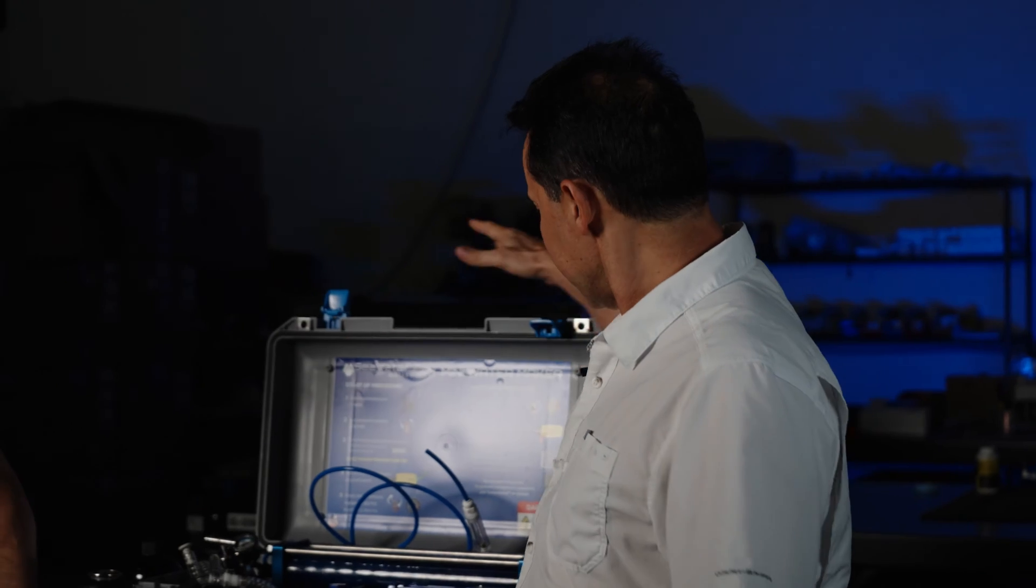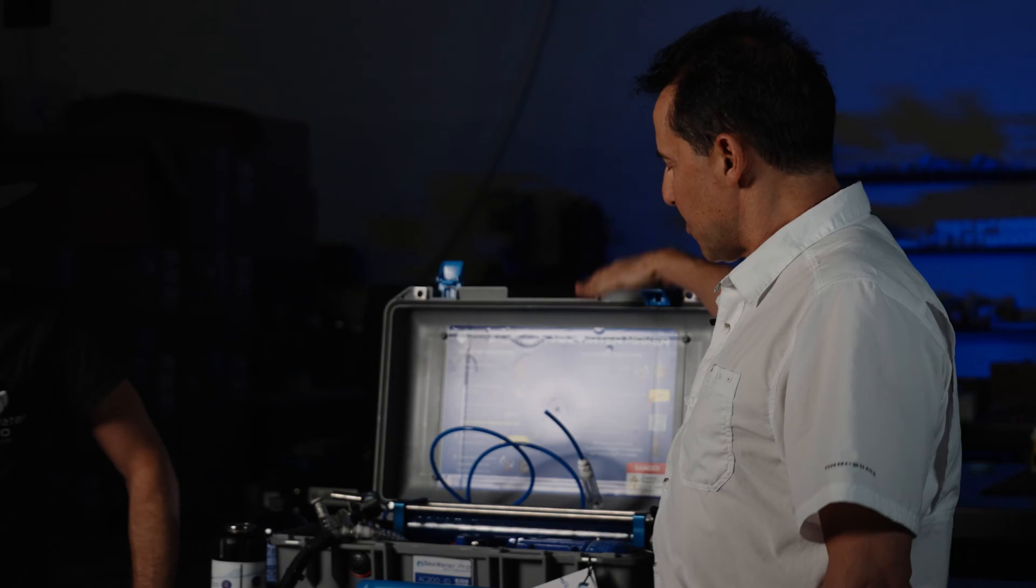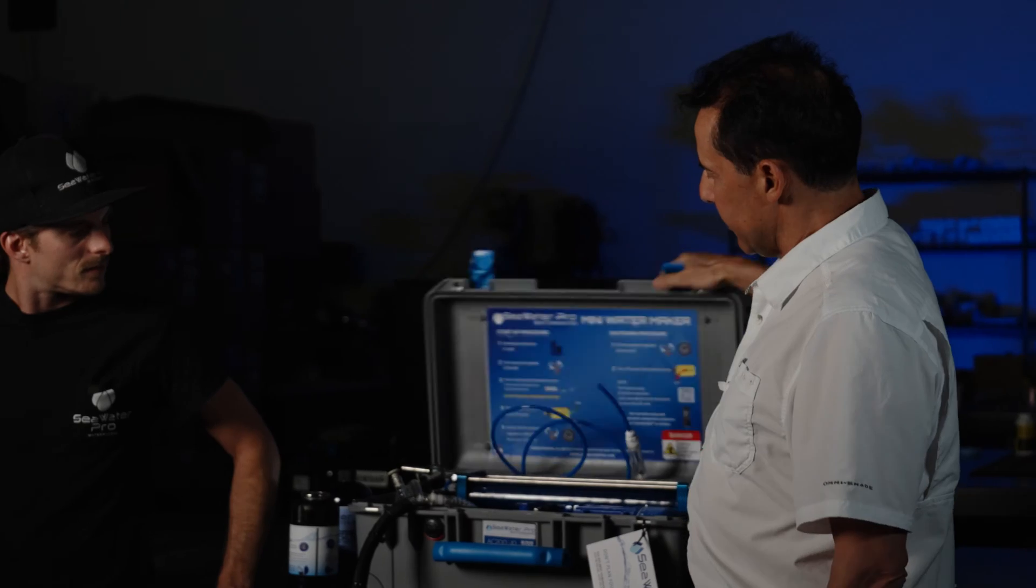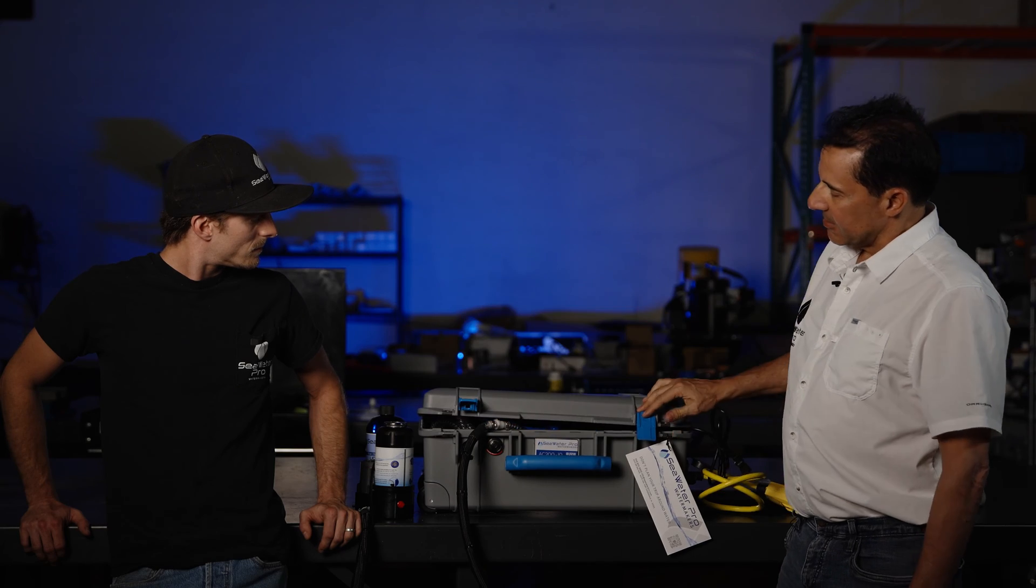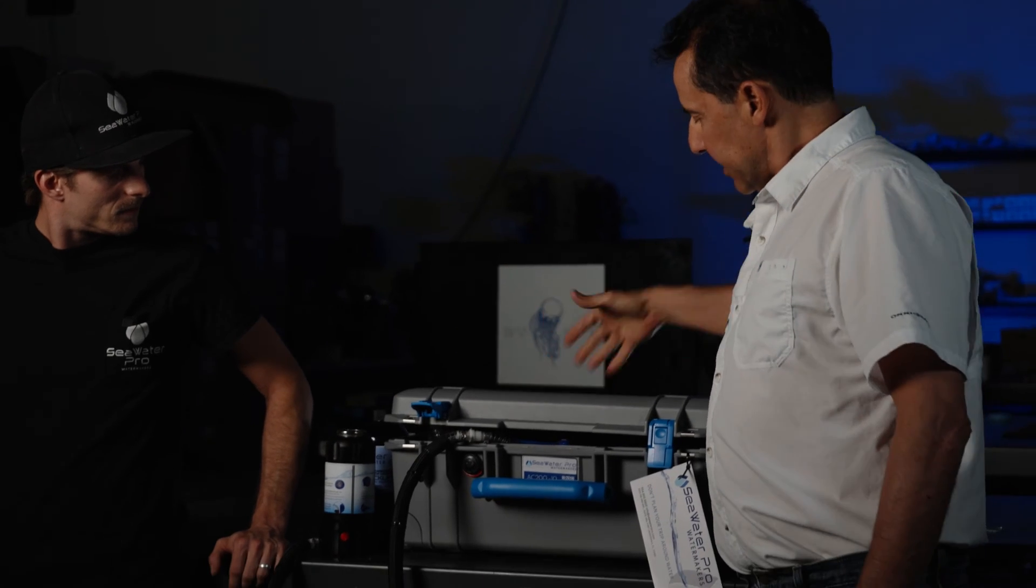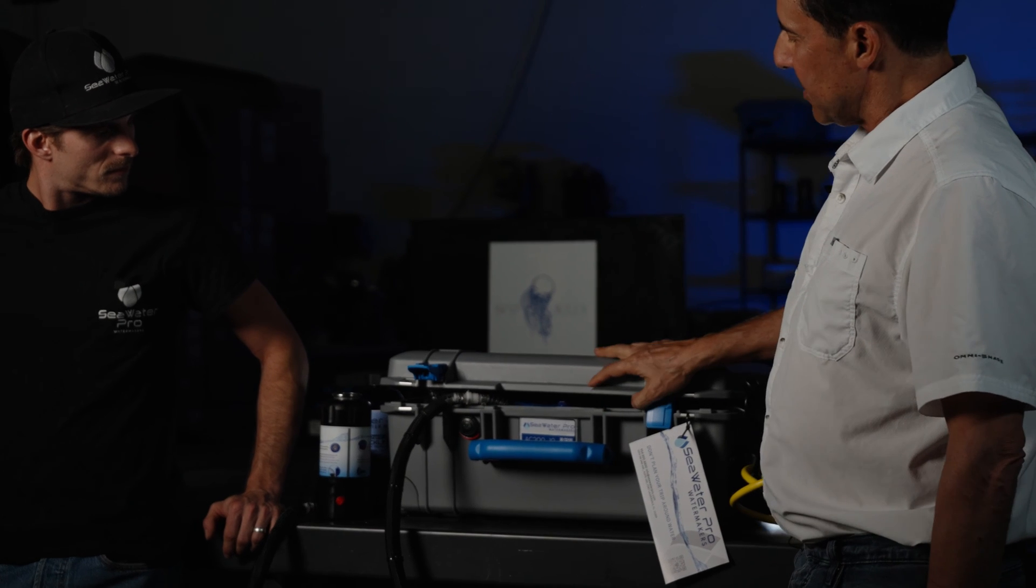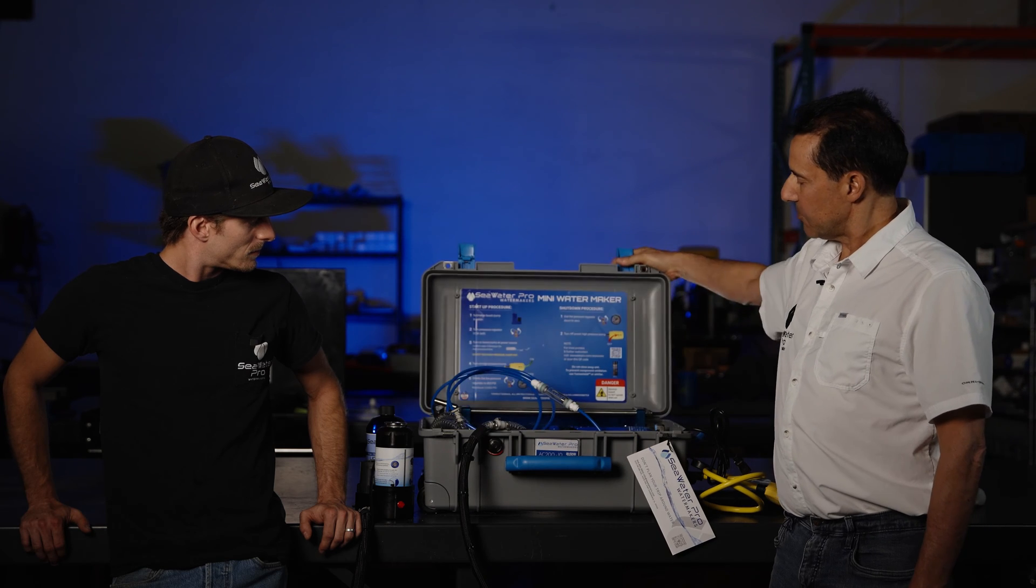Our portable water maker was designed and made in-house by Seawater Pro. It is a single unit. It fits in a carry-on, legal carry-on size briefcase which is about 19 by 17 by 8 inches tall. It weighs 50 pounds and everything fits in that single carry-on briefcase.